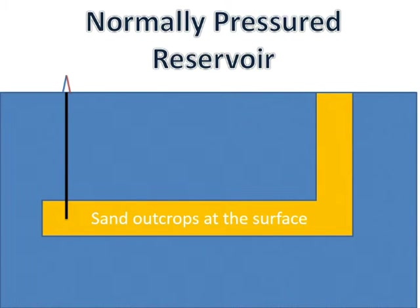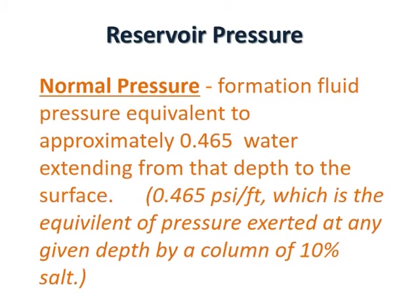Before you is a normally pressured sandstone reservoir. The reservoir is considered to be normally pressured because the sand outcrops at the surface. If the sand outcrops at the surface, the pressure exerted is the result of the fluid densities in the sandstone and not the overburden of the rock. A normally pressured reservoir is one where the formation fluid pressure is equivalent to approximately 0.465 psi per foot, equivalent to the pressure exerted at any given depth by a column of water with a 10% salt solution.